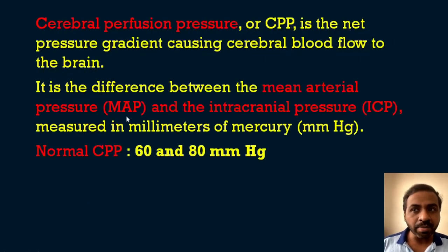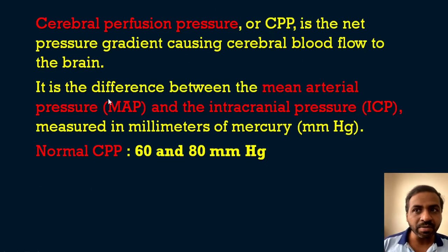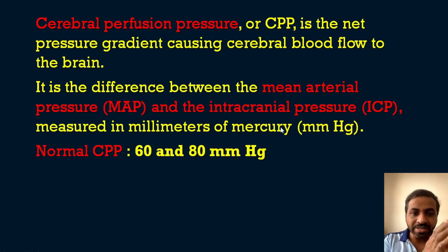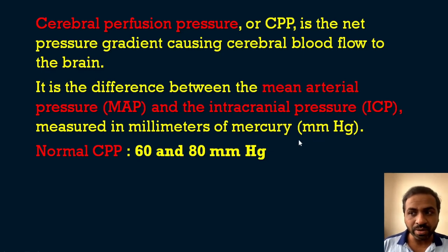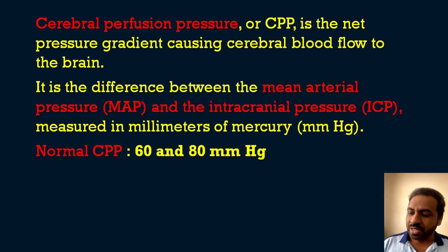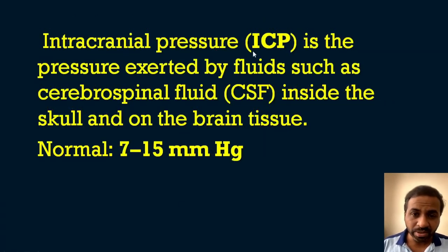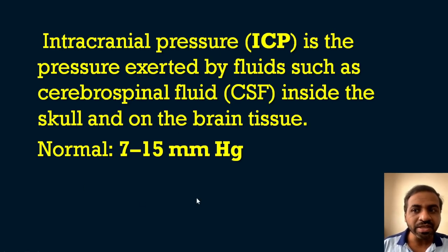Cerebral perfusion pressure is calculated as MAP minus ICP. Normal CPP is 60 to 80 mmHg. ICP (intracranial pressure) is the pressure exerted by CSF inside the skull, with a normal value of 7 to 15 mmHg. MAP (mean arterial pressure) is the average arterial pressure throughout one cardiac cycle — systole and diastole — with a normal range of 65 to 110 mmHg.